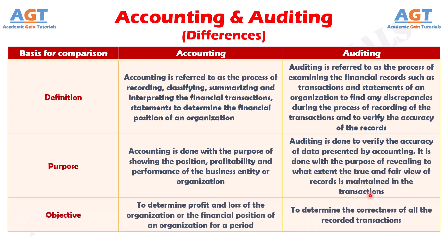Number three: Accounting is done to determine the profit and loss of the organization, or the financial position of an organization for a period. Whereas auditing is done to determine the correctness of all the recorded transactions.